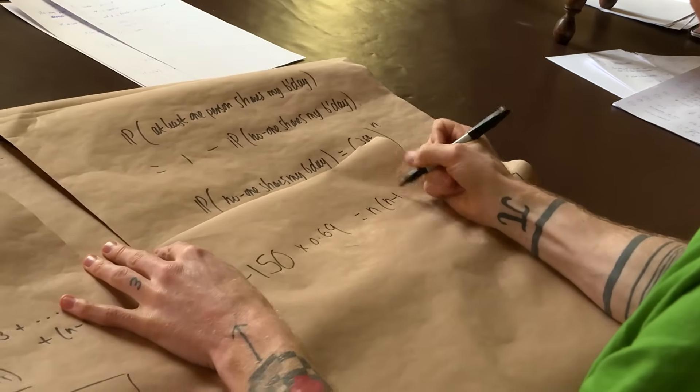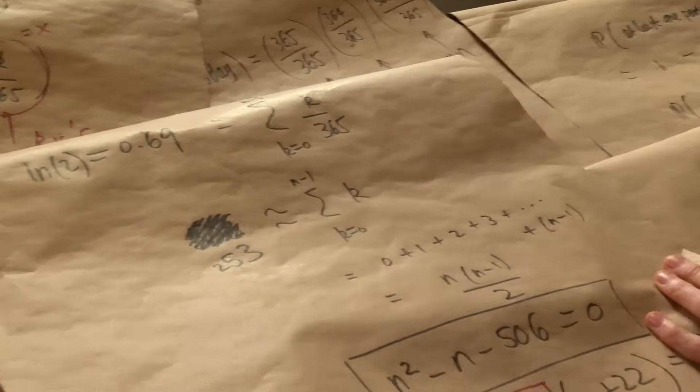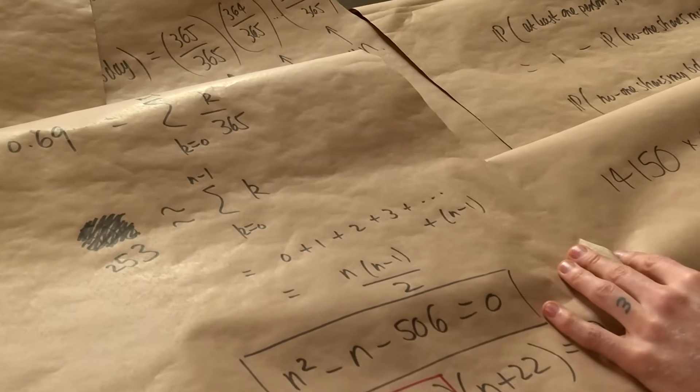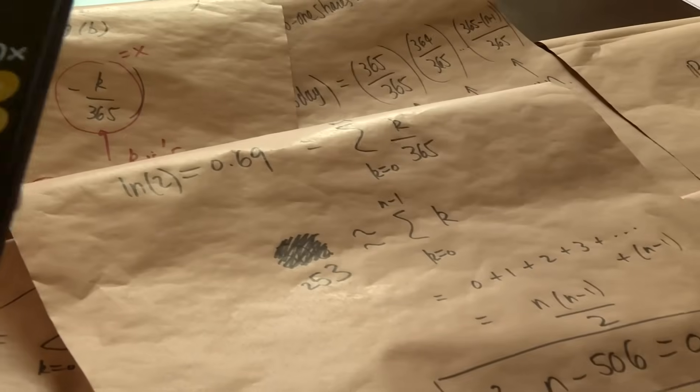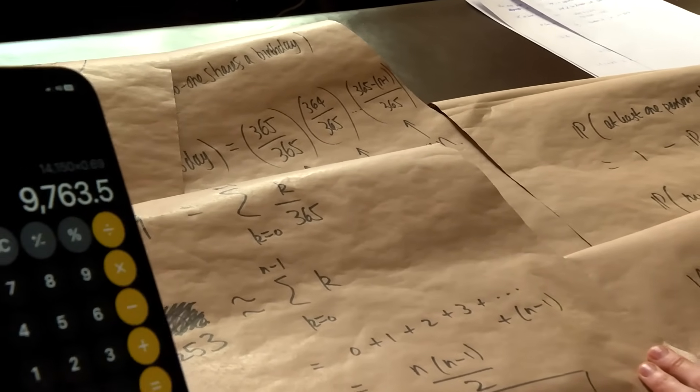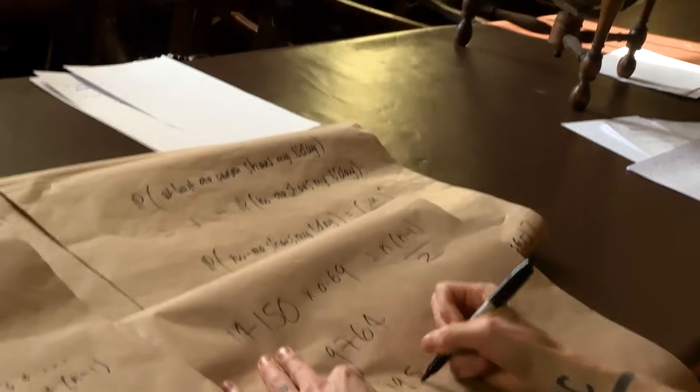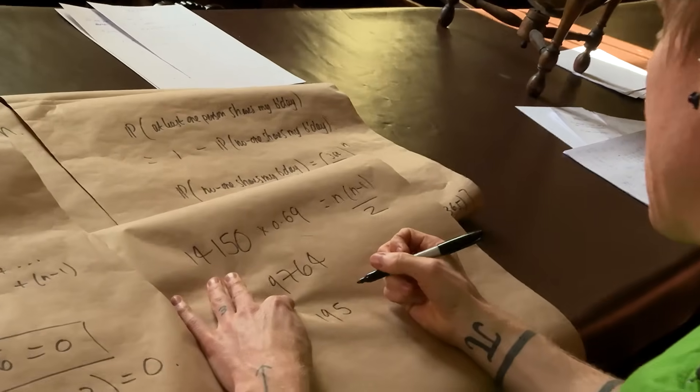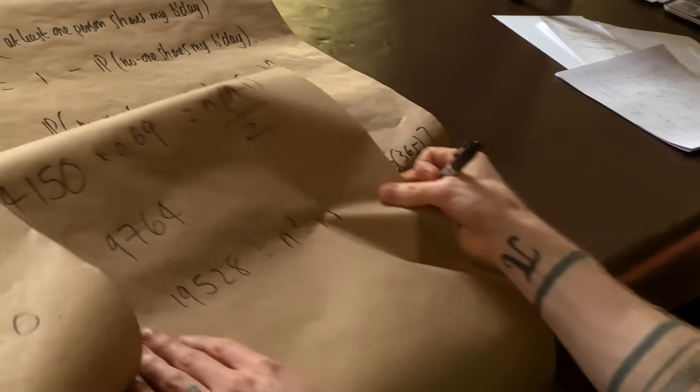So what do we want? We want 14,150 times 0.69. Times 0.69, it's gonna approximately—are you looking at nine seven six?—let's go 9764. And then we need to double that: 19,528 equals n squared minus n.